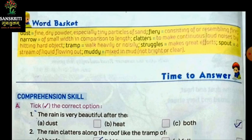First one is dust. Dust ka meaning kya hai? Fine dry powder, specially tiny particles of sand. Dust kya hota hai? Dhool hoti hai. Chote chote particles hote hai sand ke, raat ke.